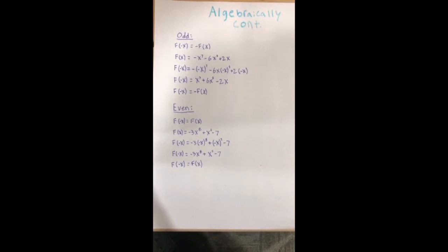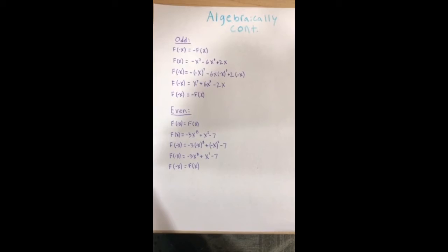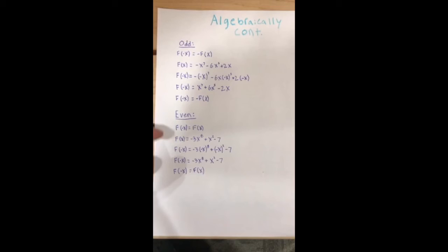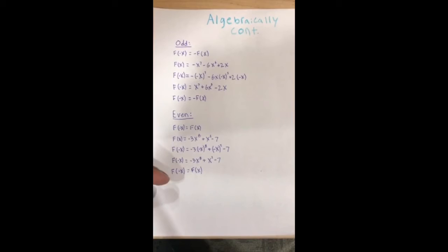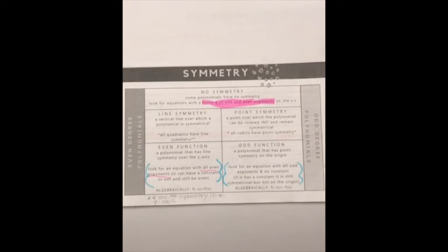Whereas in even functions, f(-x) equals f(x). So when we sub in minus x for all the x's in the equation, everything returns to its original signs when simplified. Basically, you get the exact same equation. Here is our original equation. We sub in minus x, and this is proven to be correct.